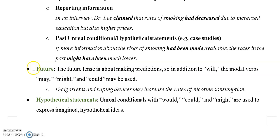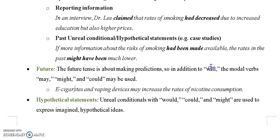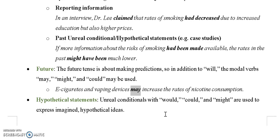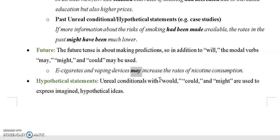The future is generally simple. In addition to 'will,' we can use 'may,' 'might,' or 'could.' For example: 'E-cigarettes and vaping devices may increase the rates of nicotine consumption.' 'Will' is a strong prediction, but sometimes we have to be tentative and hedge a little bit. We need to separate predictions — using will, may, or could — from hypothetical statements where 'would,' 'could,' or 'might' are used to express hypothetical ideas.